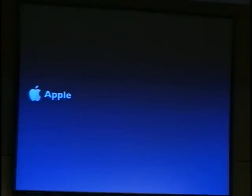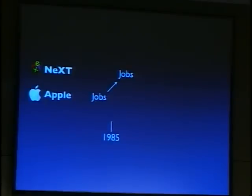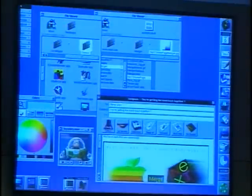So Apple looked for an operating system to buy, and they had a closer look at two operating systems of the time. One was Steve Jobs' NeXTSTEP. Steve Jobs was the former head of Macintosh development, and he had left Apple in 1985 and then founded the company NeXT. Here's a screenshot of NeXTSTEP from around 1995.